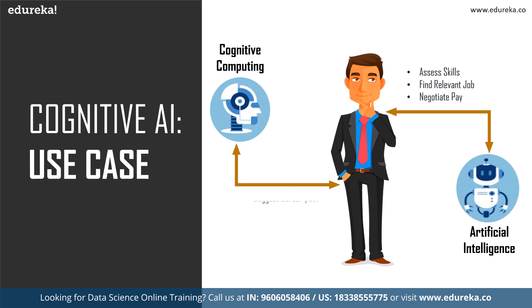A cognitive system, on the other hand, suggests potential career paths to the job seeker and furnishes the person with important details like additional education requirements, salary comparison data, and open job positions — but the final decision is still made by the job seeker. This illustrates that cognitive computing helps us make smart decisions on our own leveraging machines, whereas AI is rooted in the idea that machines can make better decisions on our behalf.